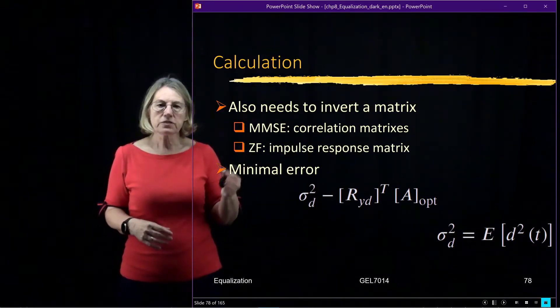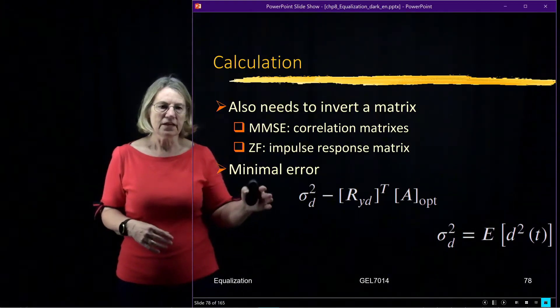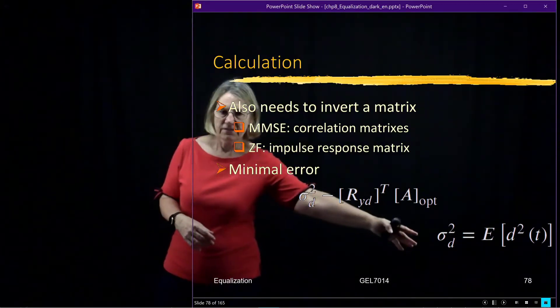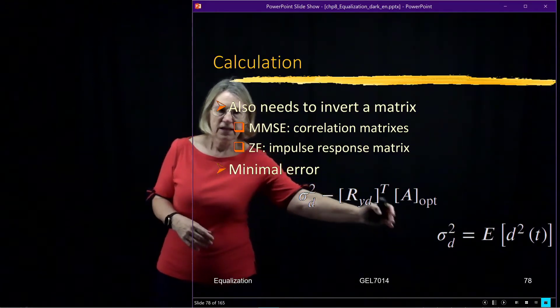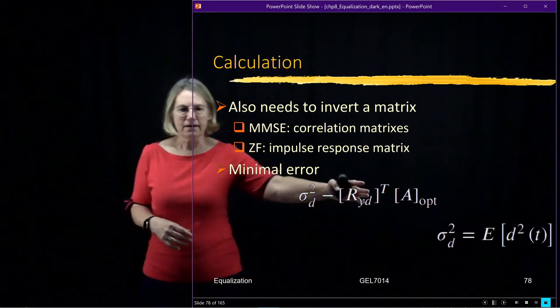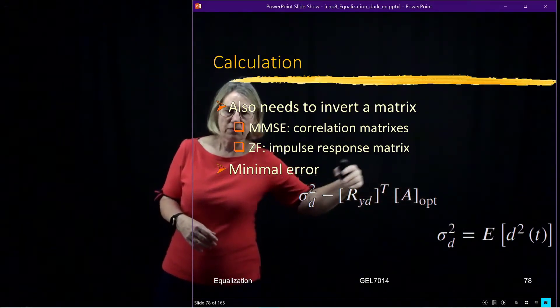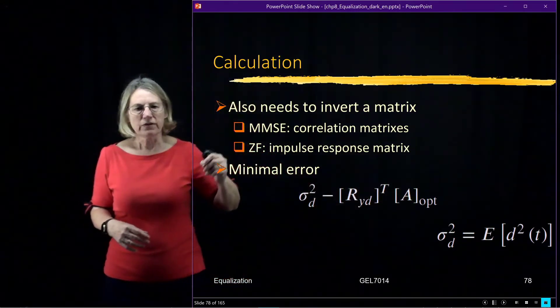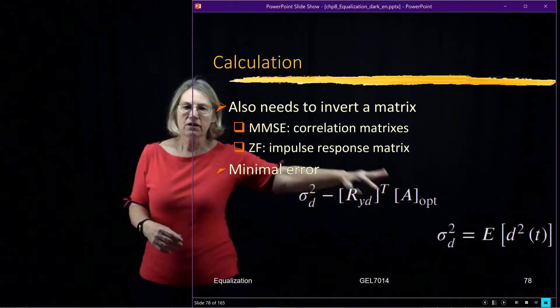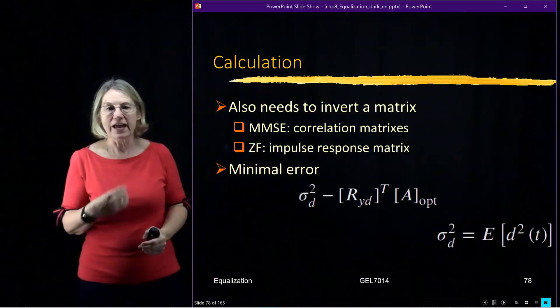In terms of the error in this case, it would be the difference in the variance of the data itself and the variance which comes from this set of optimal coefficients. So we do have an analytic expression for the minimal error that we can achieve.